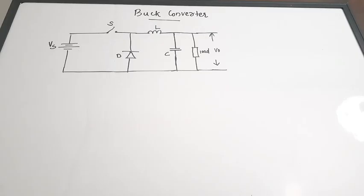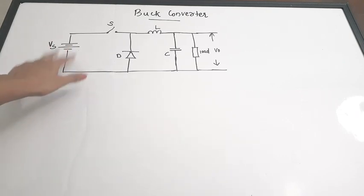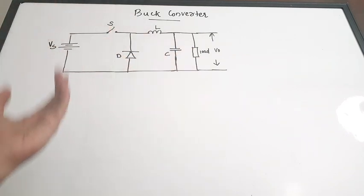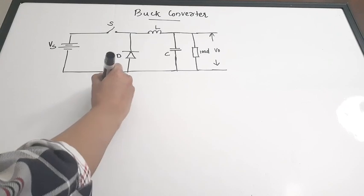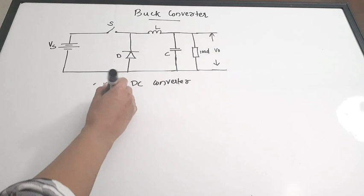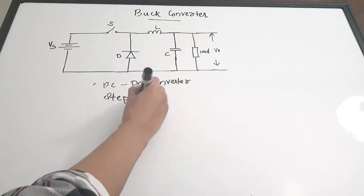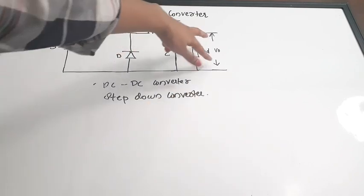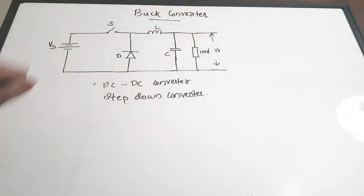In this video we are going to discuss about buck converters. A buck converter is a step-down converter. Here in the circuit diagram you can see there is a supply voltage V_s and an output voltage V_0 — both are DC voltages. This buck converter is a DC-to-DC converter, and being a step-down converter means the average value of the output voltage will be lesser than the supply voltage.